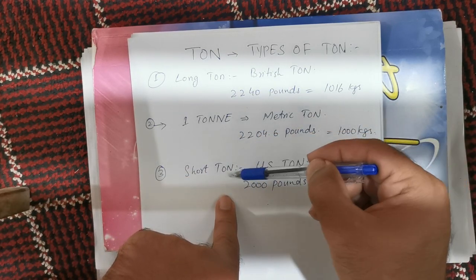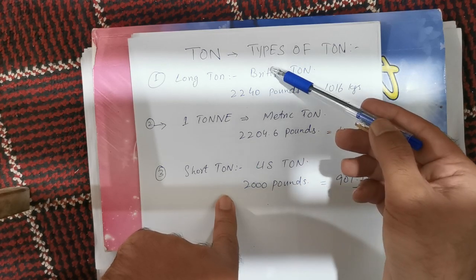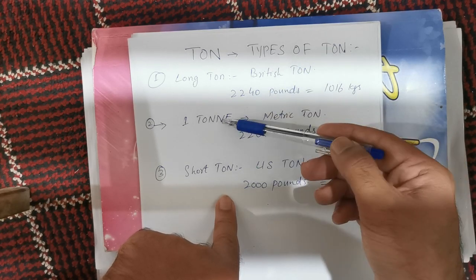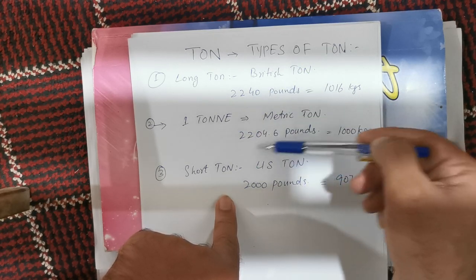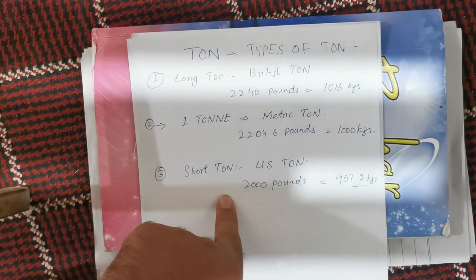So these are the three different types of TUN: Long TUN (British TUN), Metric TUN (simply called TUN), and Short TUN (US TUN). Thank you.